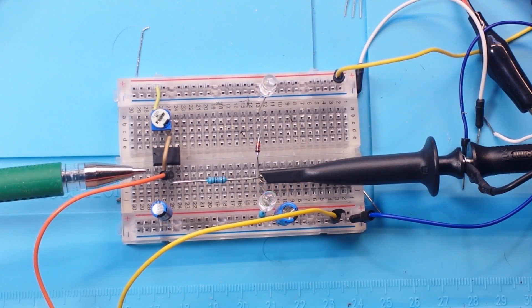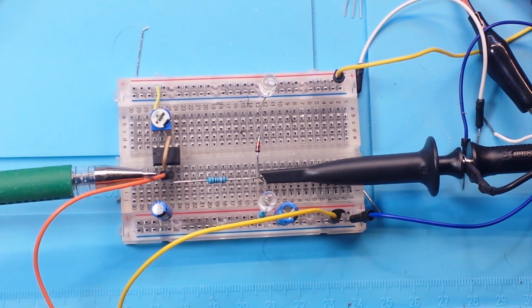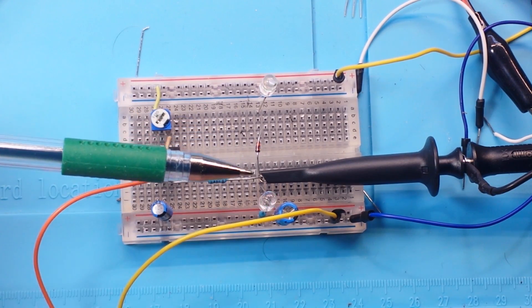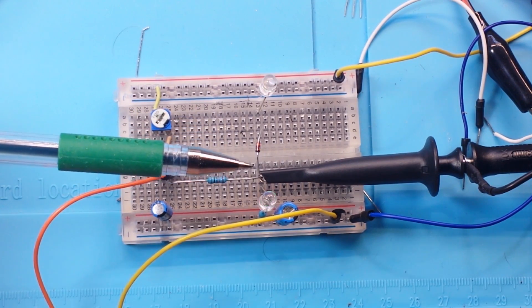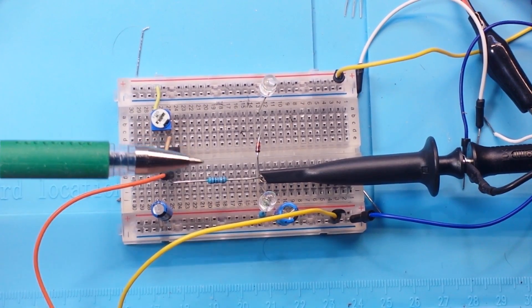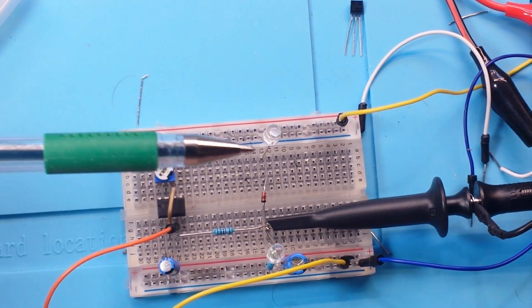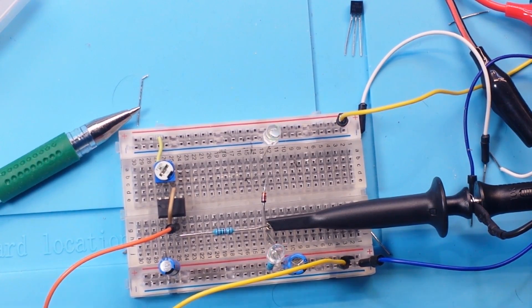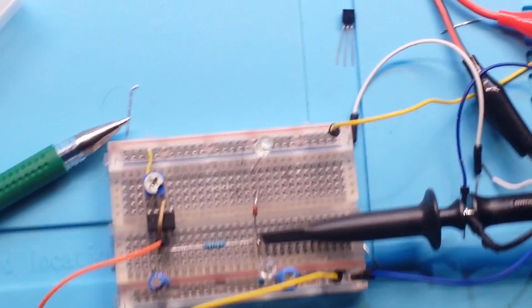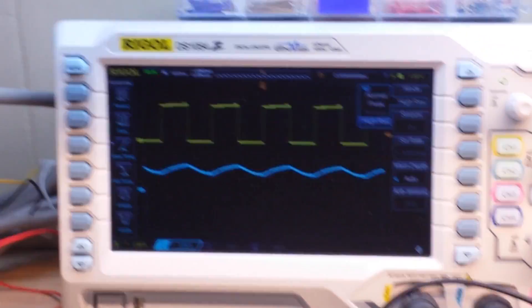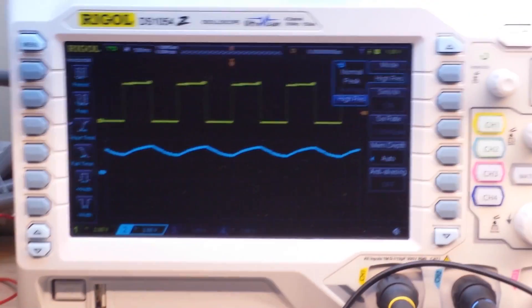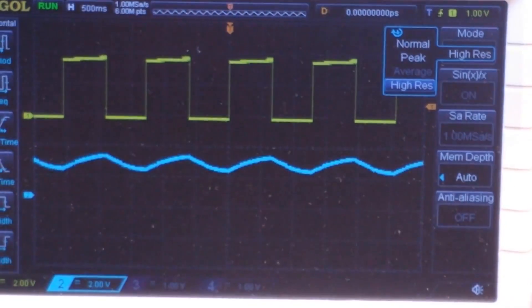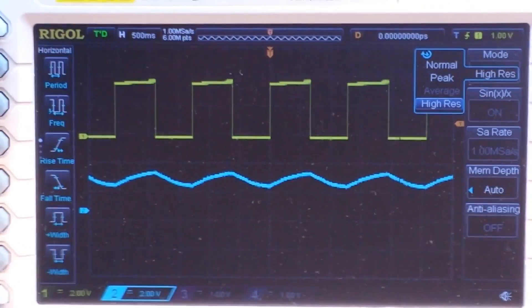So here is our output of the 555 timer, the direct output on channel 1 of the scope. And then over here we have our modified output on channel 2. And you can see our LEDs are fading up. So let's take a look at the scope and see what there is to see. I think you'll find this somewhat interesting. I know I do.